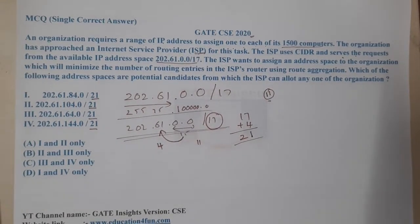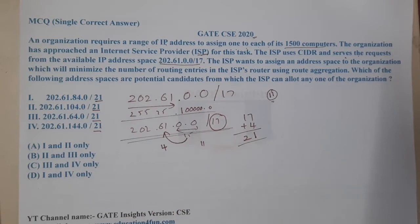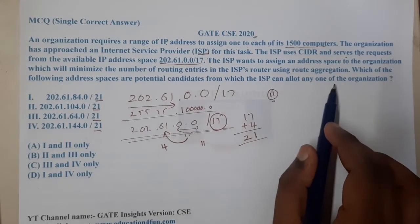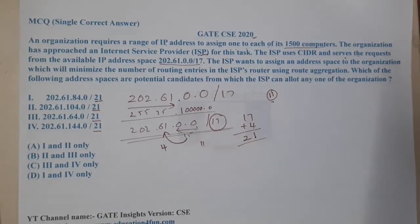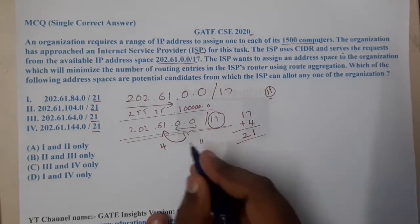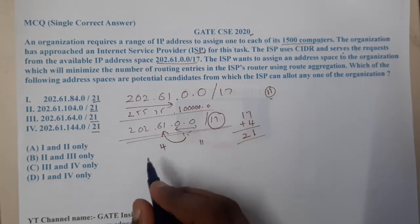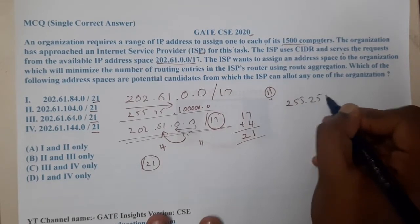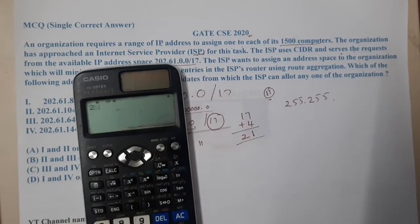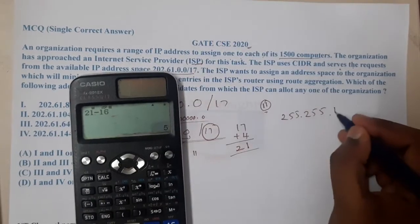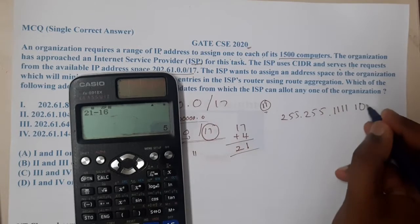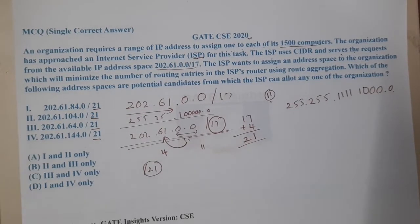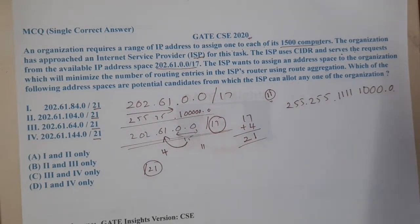Now the question asks which of the listed address spaces the ISP can allocate to the organization. Our mask is /21, which equals 255.255 dot — since 21 minus 16 = 5, the third octet has 5 ones followed by 3 zeros — so the mask is 255.255.11100000.0. Among the four options, we need to find which ones give a valid result.